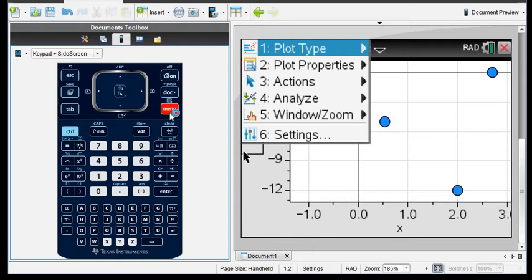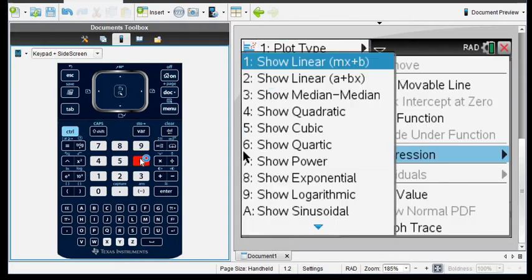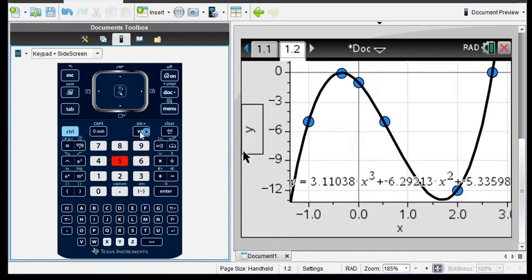What we're going to do is go to menu and option 4 analyze, and then option 6 regression, and you can see all the different types of regression. I want to show a cubic regression.